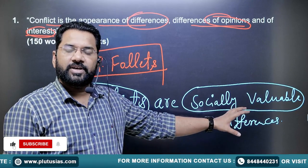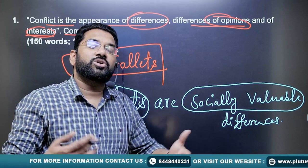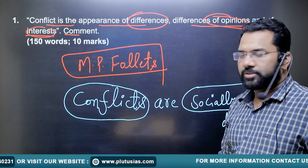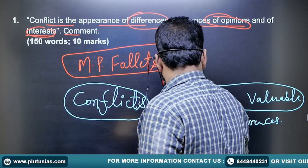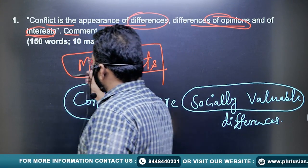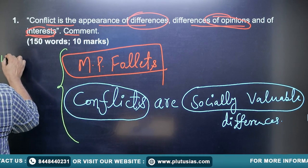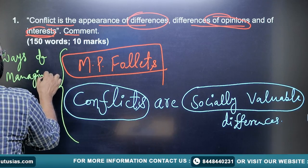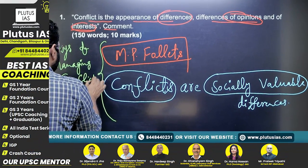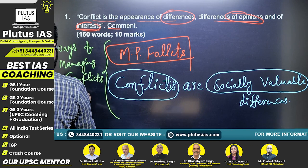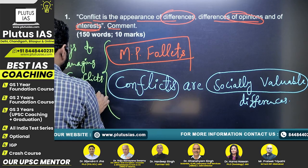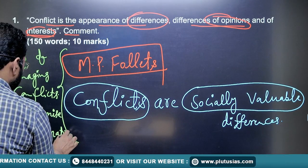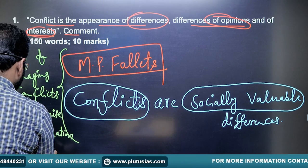We should deal with conflicts holistically so that they may produce good results. Beyond that, Mary Parker Follett talked about ways to handle conflicts. She highlighted ways of managing conflicts. She talked about a threefold strategy. The first one is compromise. The second was domination. And the third was integration.